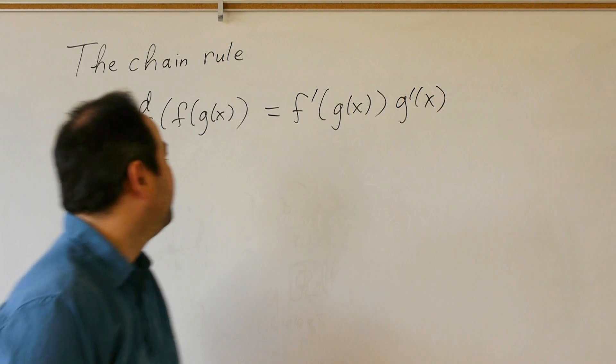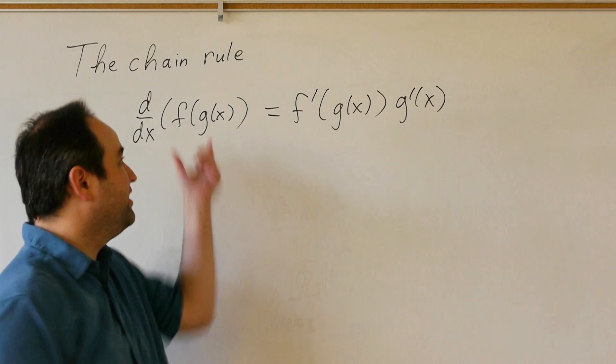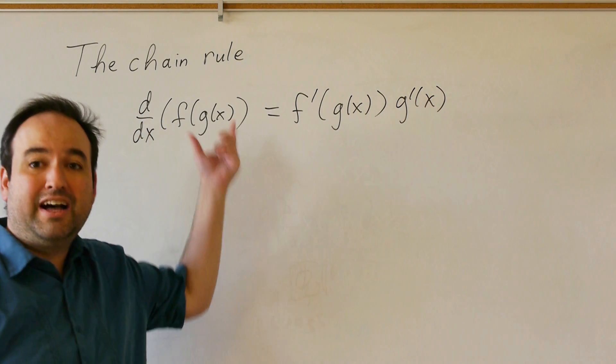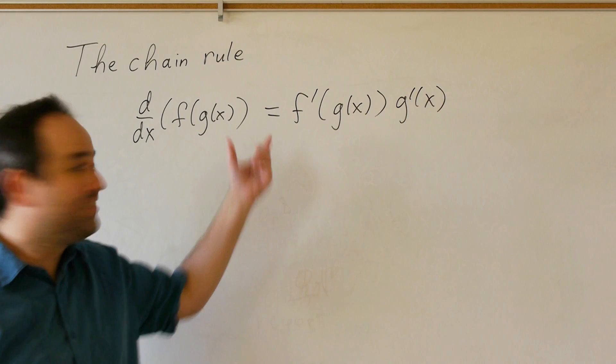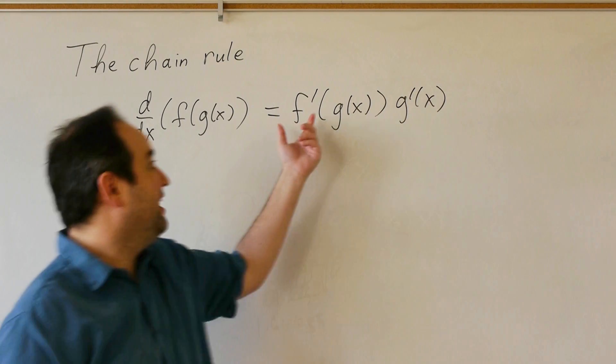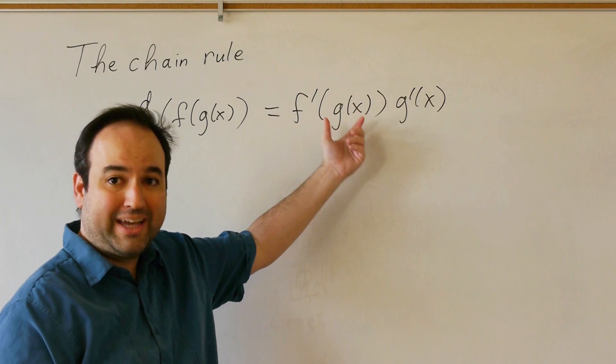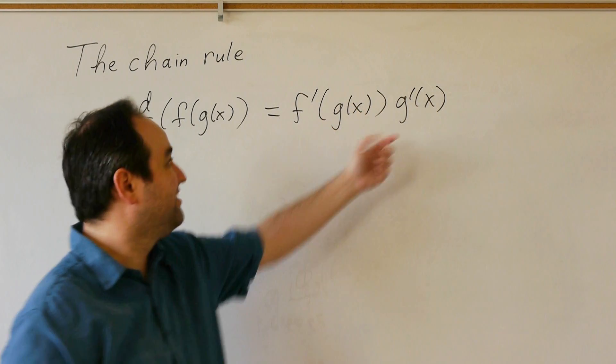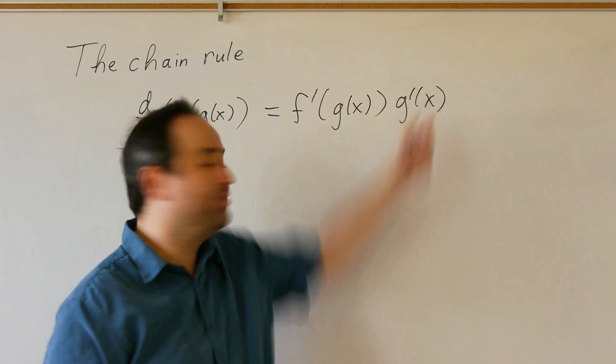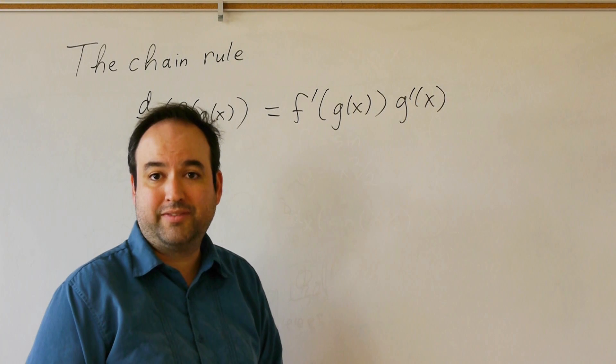In other words, the derivative of f of g of x is f prime evaluated at g of x times g prime of x.